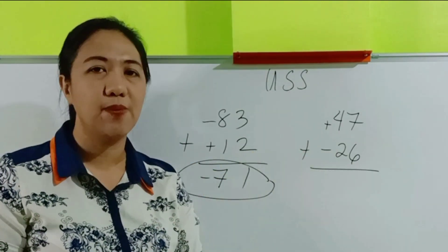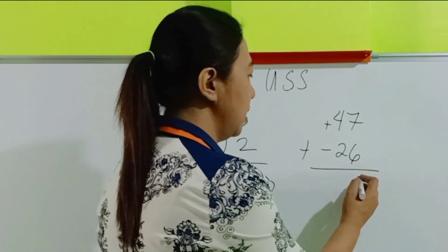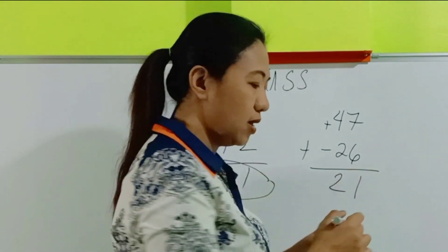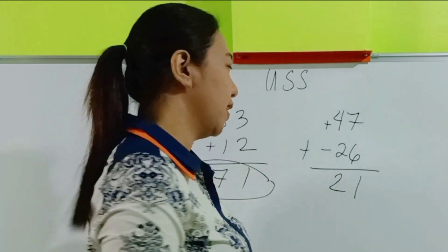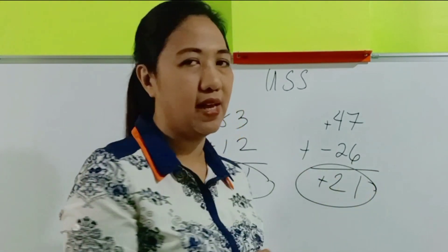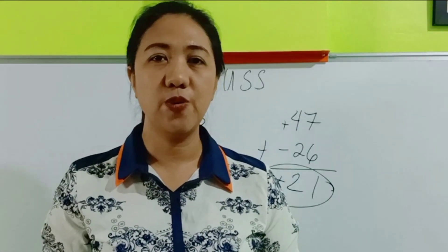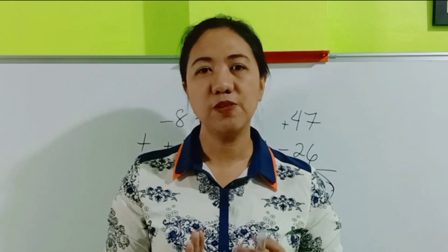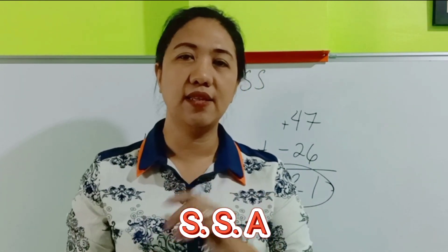In the last example, 7 minus 6 is 1 and 4 minus 2 is 2. The positive number's sign should be followed, so we affix a positive sign — the answer is positive 21. Before we go to the quiz, let's have a recap. You have to memorize these two acronyms: SSA and USS.